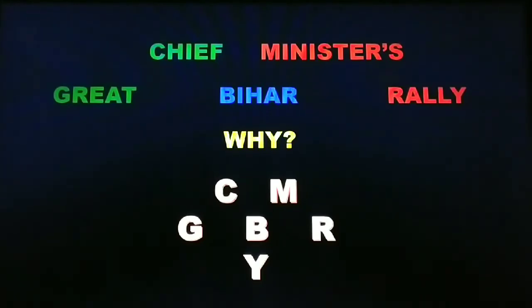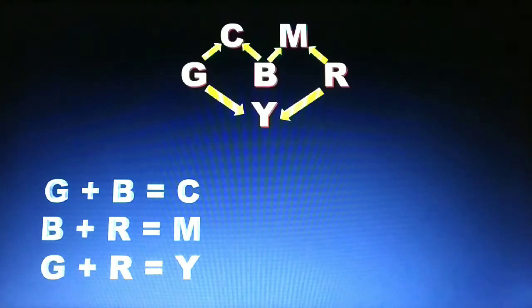Y stands for yellow. Green, blue, and red are the primary colors. Cyan, magenta, and yellow are the secondary colors. Green plus blue gives cyan; blue plus red gives magenta; and green plus red gives yellow. Very easy to remember: green plus blue = cyan, blue plus red = magenta, and green plus red = yellow.